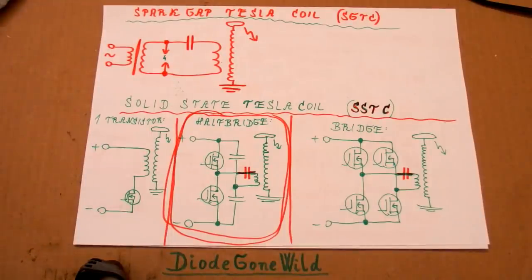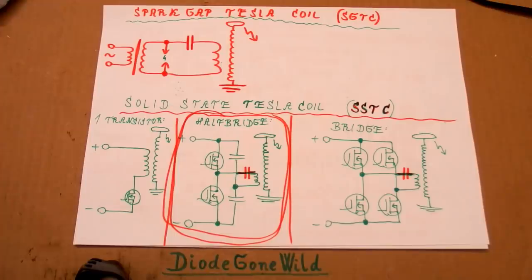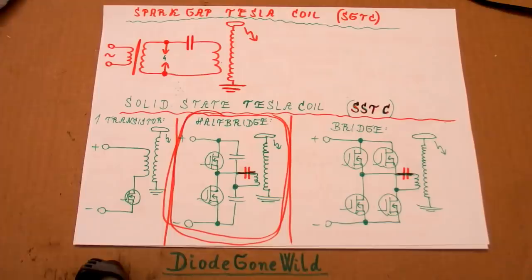Today let's make another episode of my solid state Tesla coil series. In this episode I am going to compare IGBT transistors with MOSFETs — what they have in common, what are the differences and the advantages and disadvantages of each. I am going to choose which ones to use for my solid state Tesla coil, but of course this can apply to the choice of switching component for any switching application.